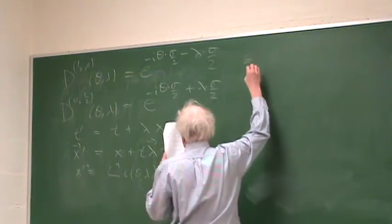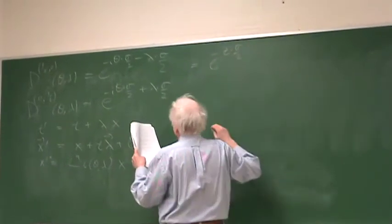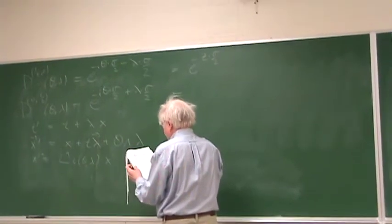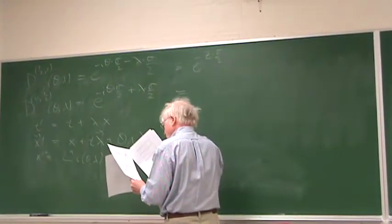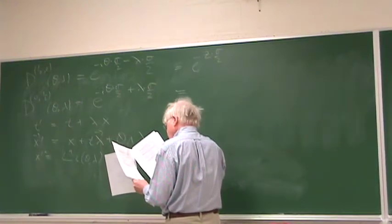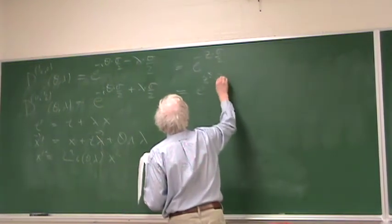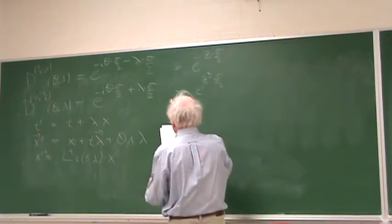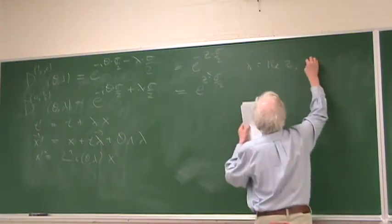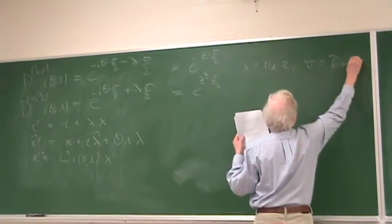This can be written as essentially E to the minus Z dot sigma over two, and E to the minus Z star. In both cases, lambda is the real part of Z, and theta is the imaginary part of Z.